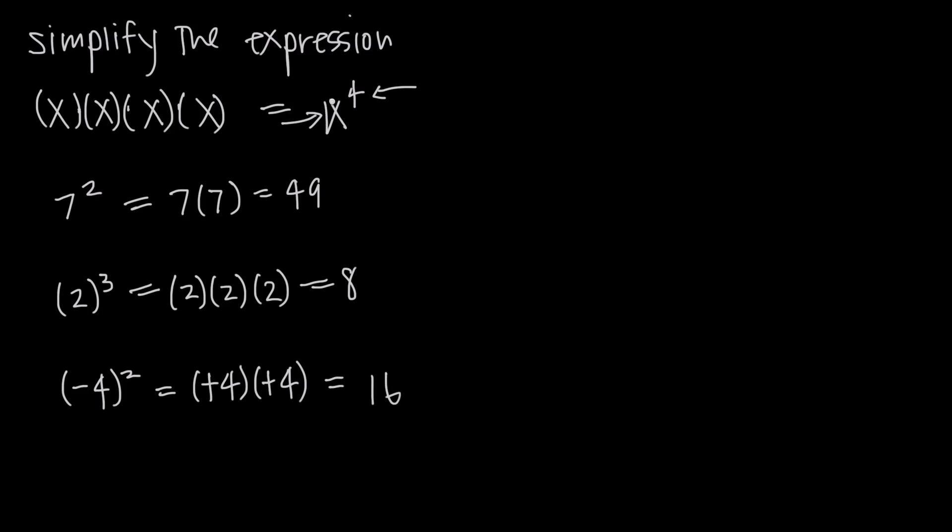So just remember, whatever's on the bottom here is the base. This number in the upper right-hand corner is the exponent, and the exponent tells us to multiply this base by itself whatever number of times is indicated by the exponent.